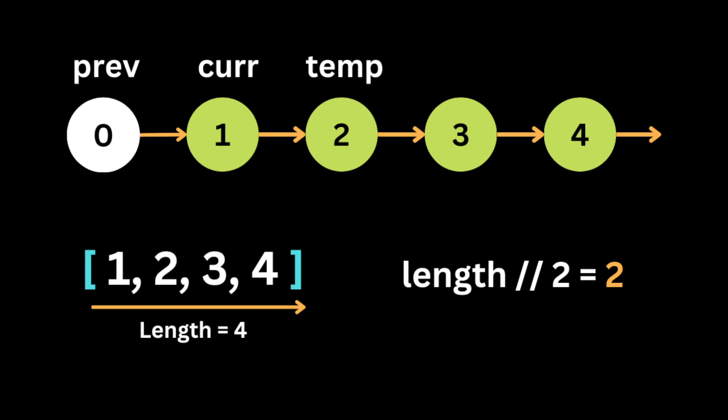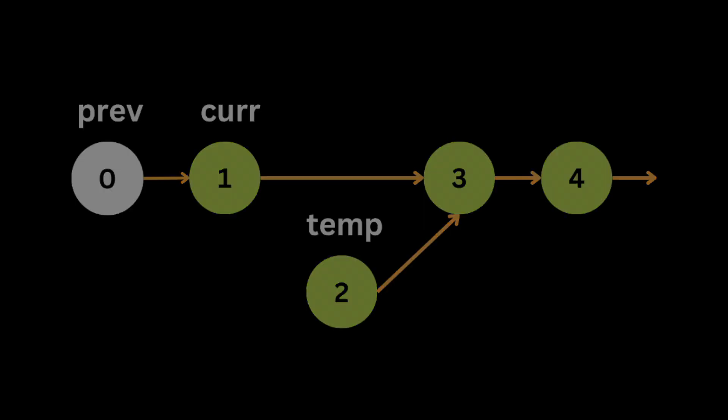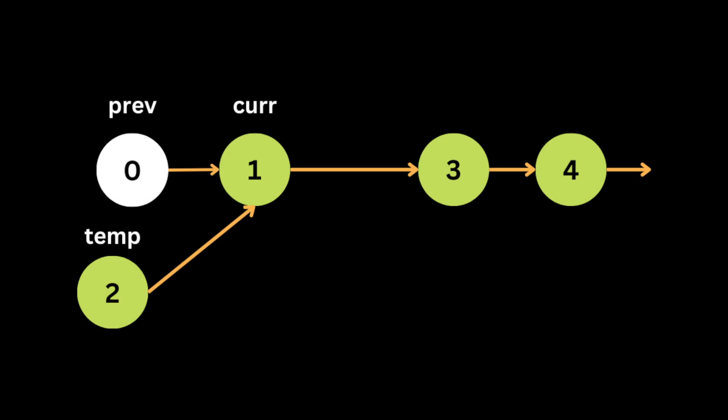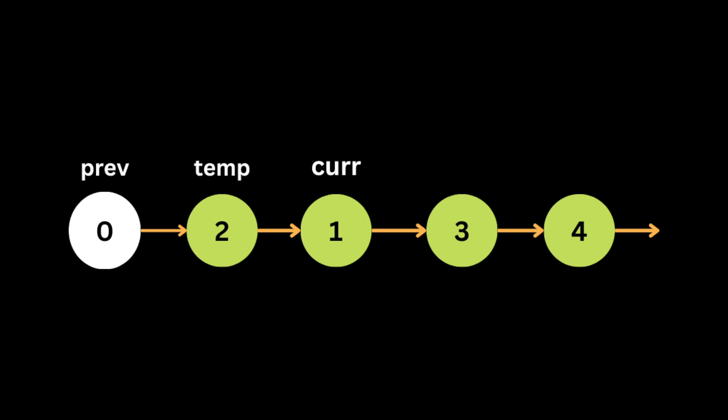We take the length of the list and divide it by two — that determines how many times the for loop or swap will execute. The first thing we do is take the next pointer of the current node and update it to the node after the temp node. Then we update the next pointer of the temp node to the current node. After that, we update the next pointer of the previous node to the temp node.